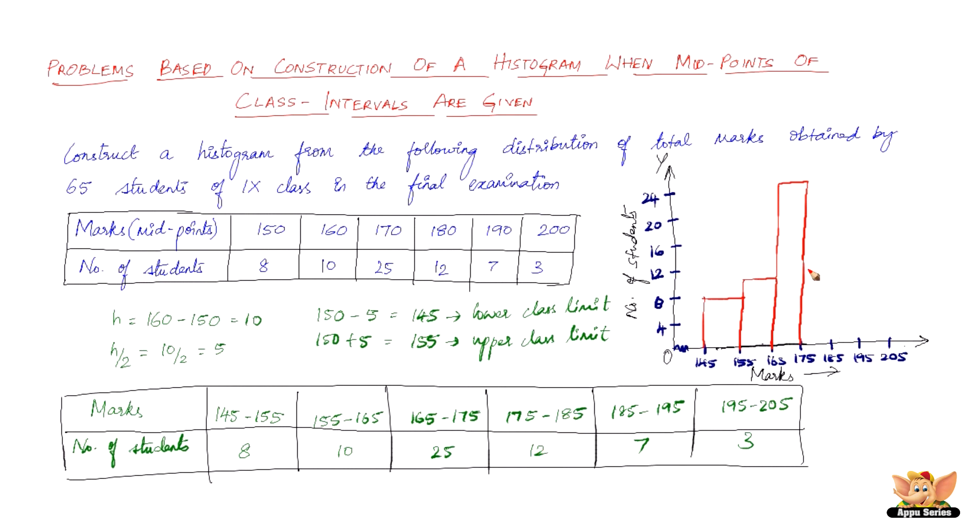The fourth one, 175 to 185, has got a frequency of 12. So here it is. And 185 to 195 is seven, which is just below eight.